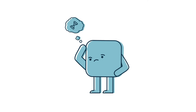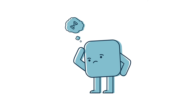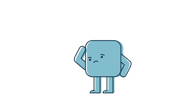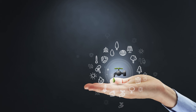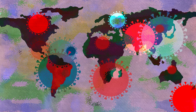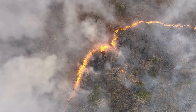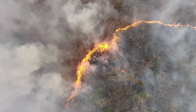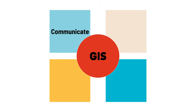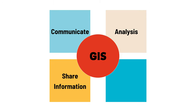How is GIS used? There are several organizations such as environmental conservation, urban planning, epidemiology, and emergency response, and a wide range of organizations in virtually every field are using GIS to make maps that communicate, perform analysis, share information, and solve complex problems around the world. This is changing the way the world works.